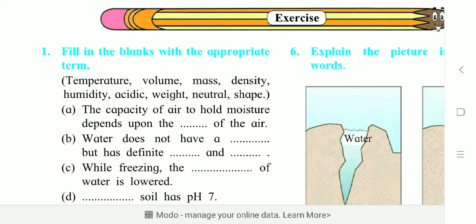So water does not have a shape but has definite mass and density. Third one: while freezing, the density of water is lowered. So students, some words we have to repeat, so here density will be repeated.